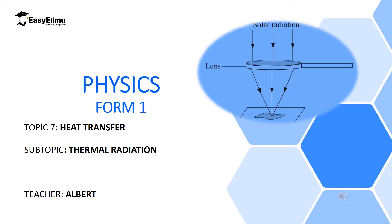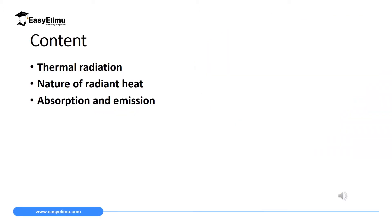When we moved to convection, only liquids and gases can transfer heat by convection. Now in this lesson we are going to discuss heat transfer by radiation, and we will realize that radiation does not even require any state of matter to be transferred. By the end of this lesson, I expect you to explain thermal radiation, the nature of radiant heat, and absorption and emission of bodies.